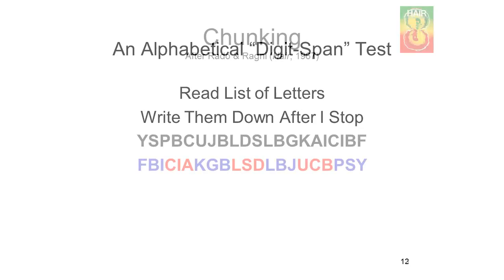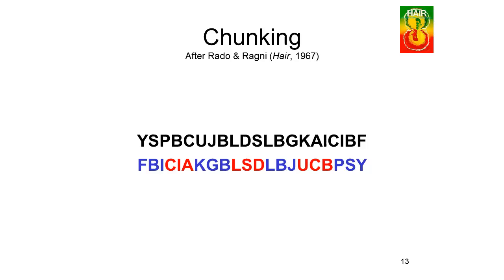Now turn to the next slide and check your list. For the first list, you probably got the first five, maybe six or seven items, but then it was all over. But in the second list, which had the same number of letters, you might even have gotten all of them. That's because in the second list, as opposed to the first, you could break the letters up into meaningful chunks: FBI, CIA, KGB — the old Soviet secret police — LSD, LBJ — the initials of an American president — UCB for UC Berkeley, PSY for psychology.